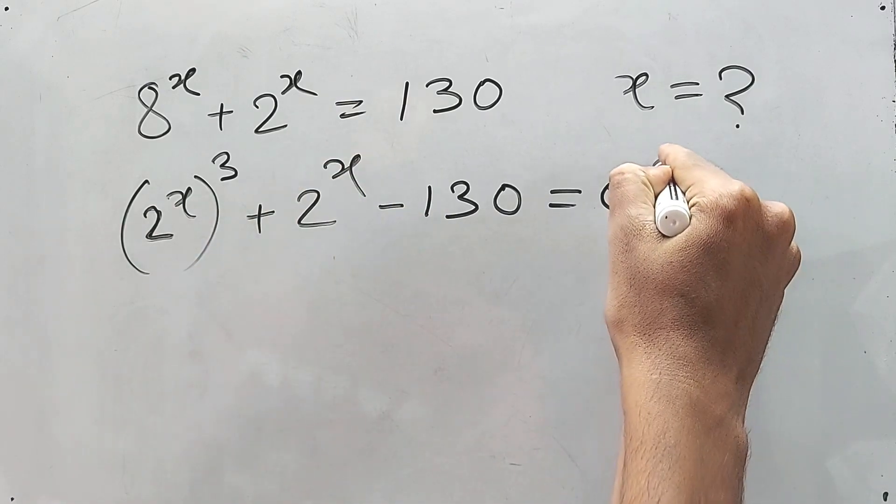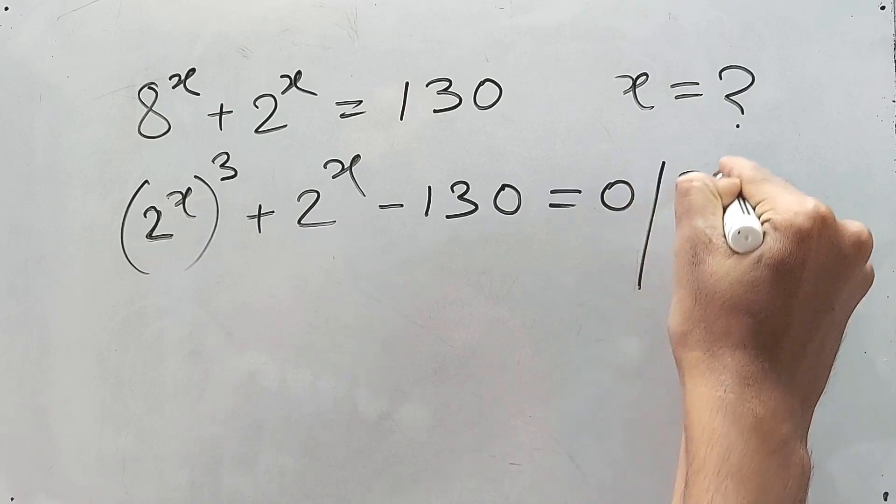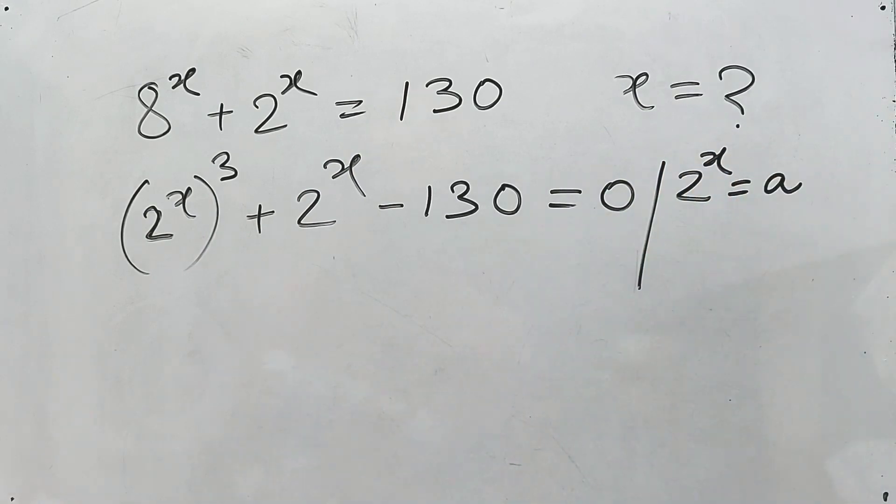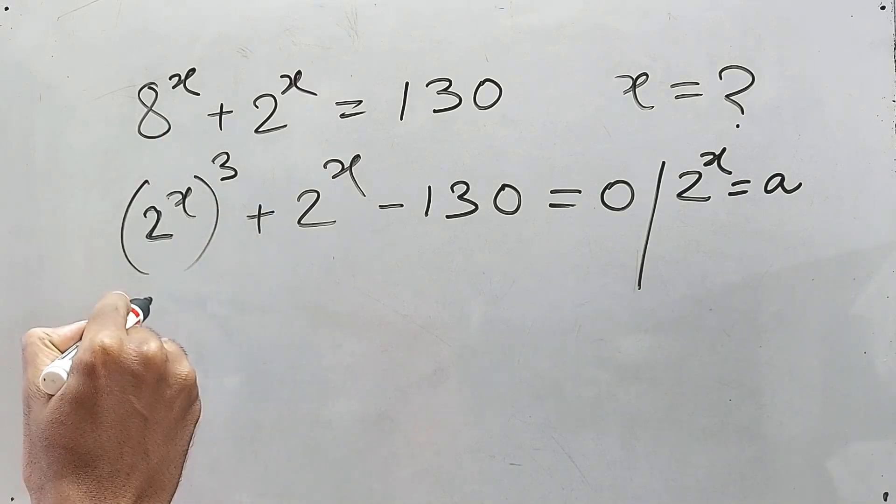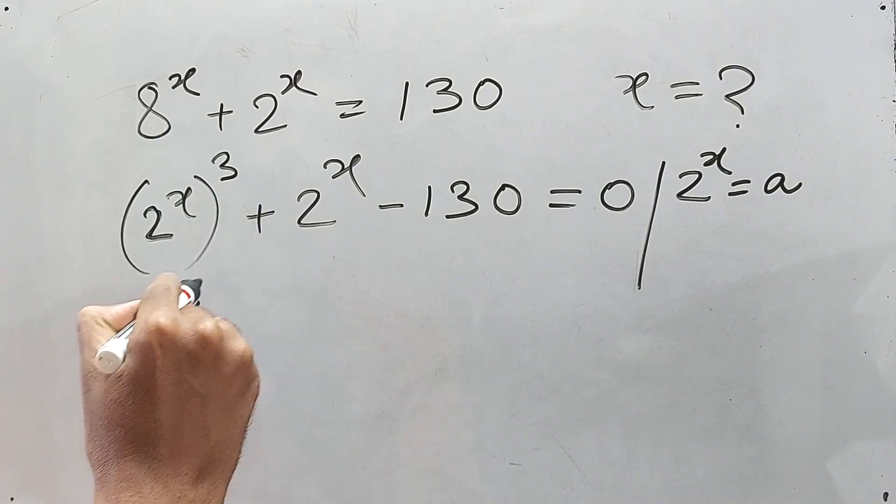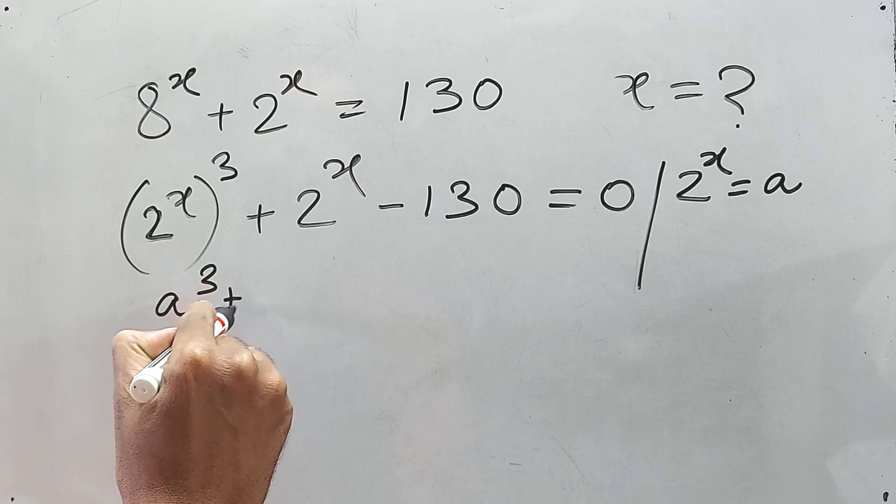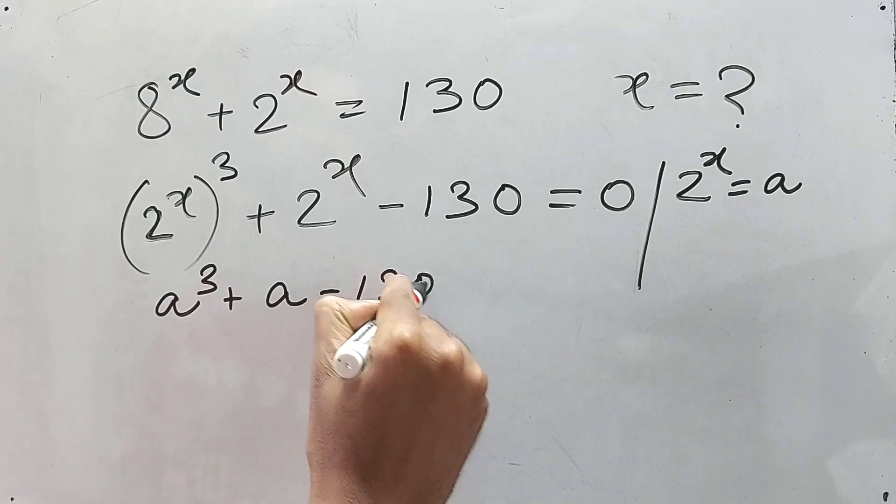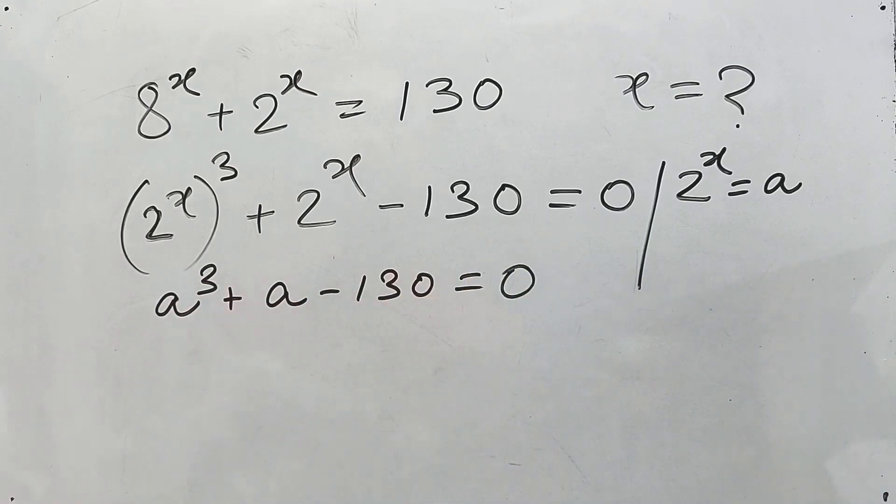How? 2 to the power x is equal to say, right? 2 to the power x is equal to a. So a cube plus a minus 130 is equal to zero. Fine, simple.